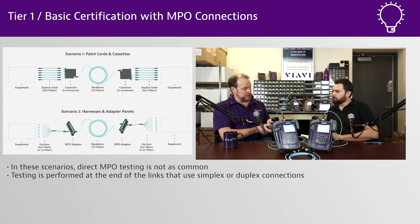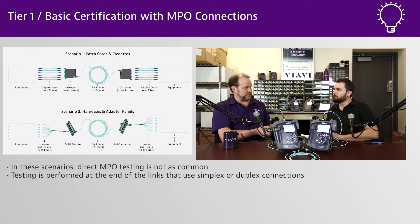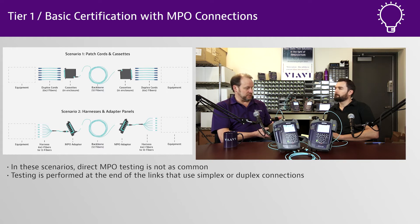In that case, you really don't need to test the trunk assembly directly. If you do need to troubleshoot it, that's where an OTDR would come into play so you can find where a specific fault is. Typically with those trunk assemblies, your issue is the MPO connections themselves, and your test is done with a classic OLTS by testing each of the individual LC drops.